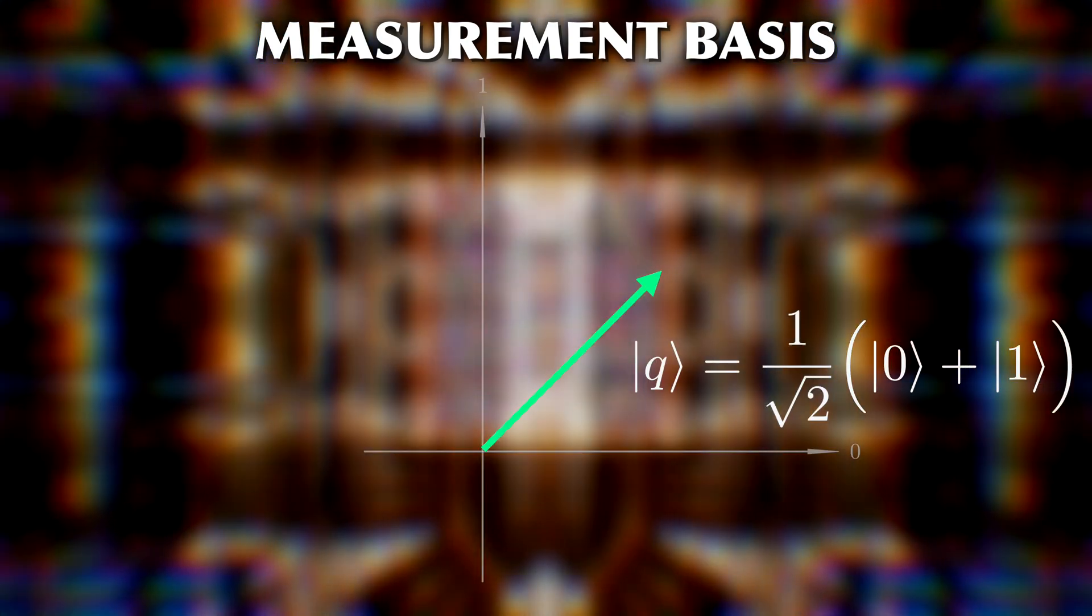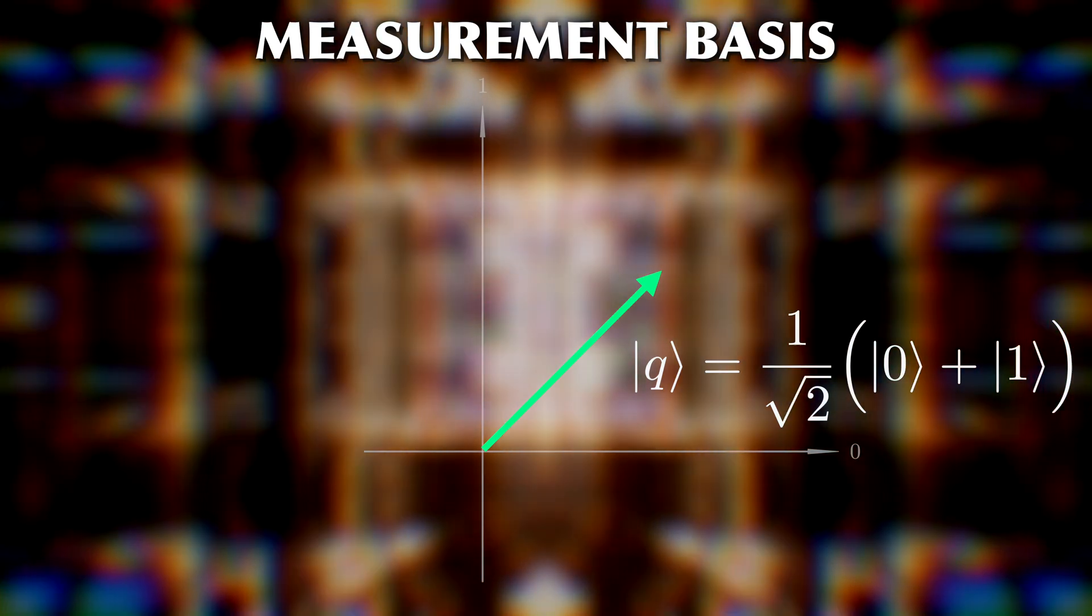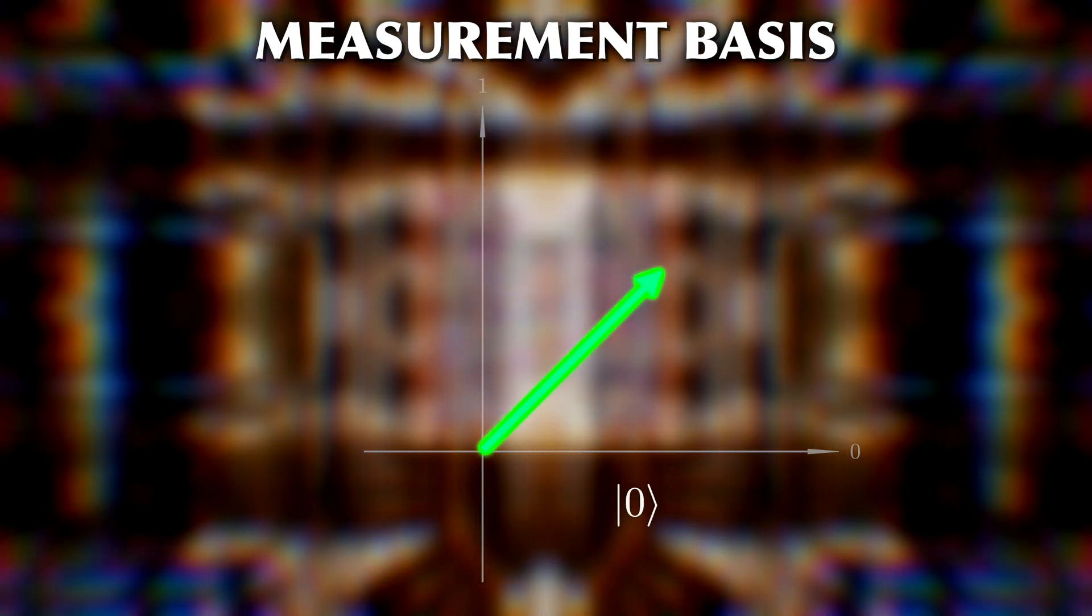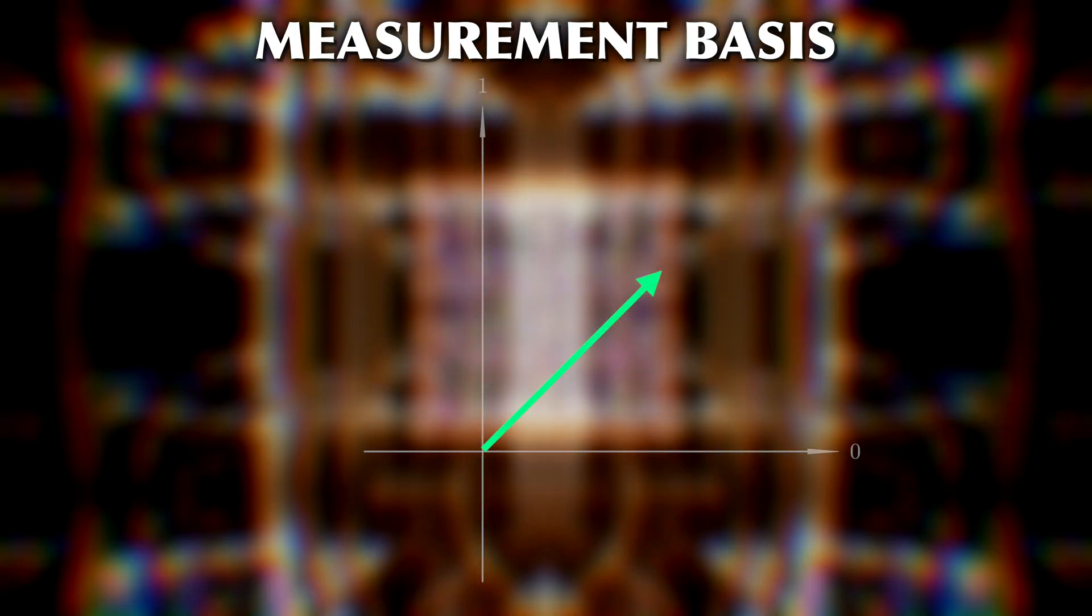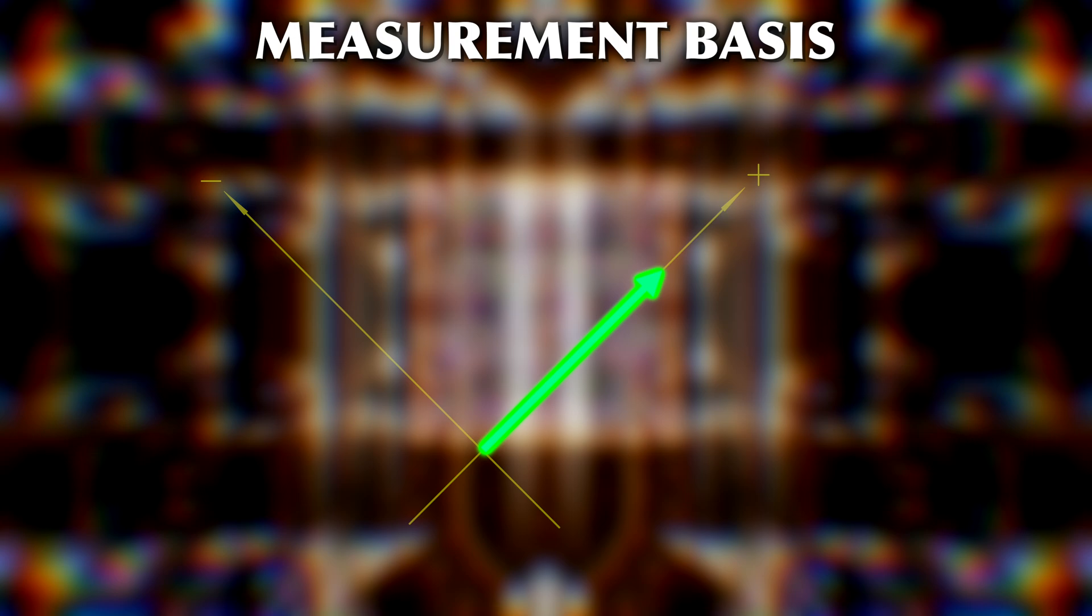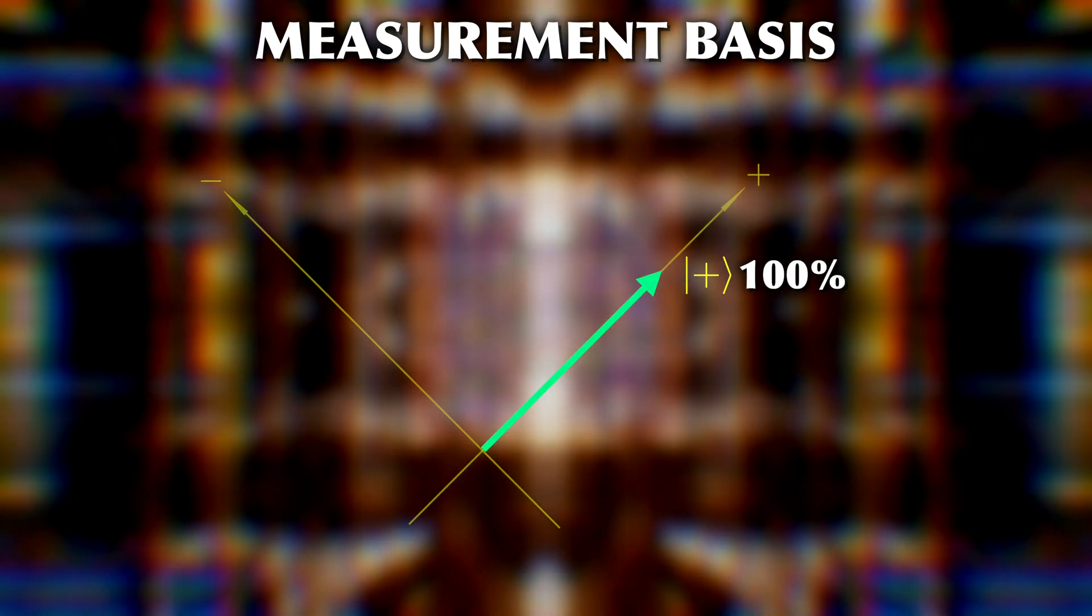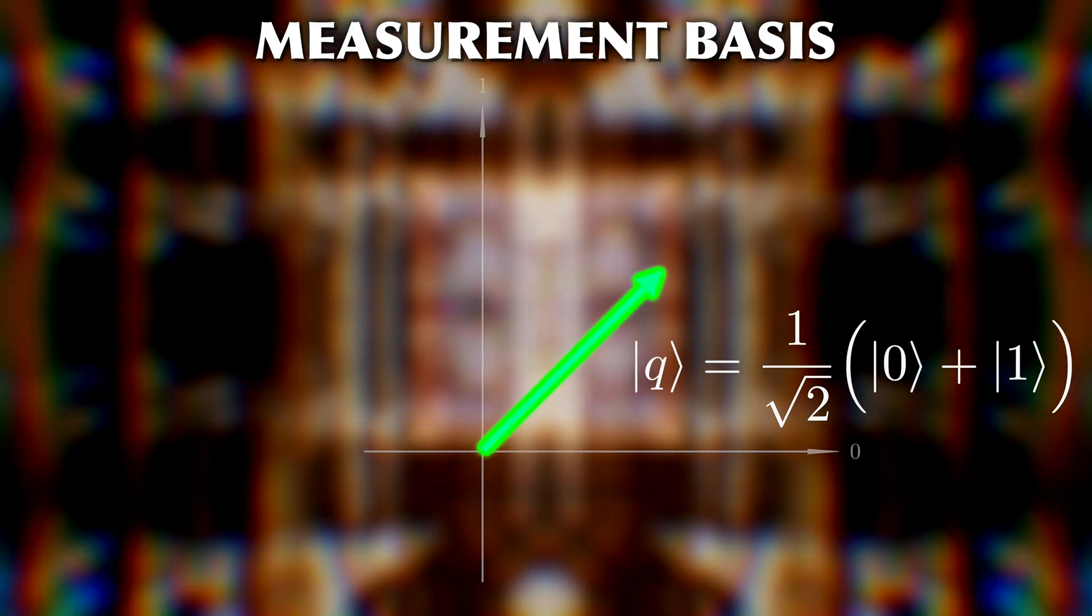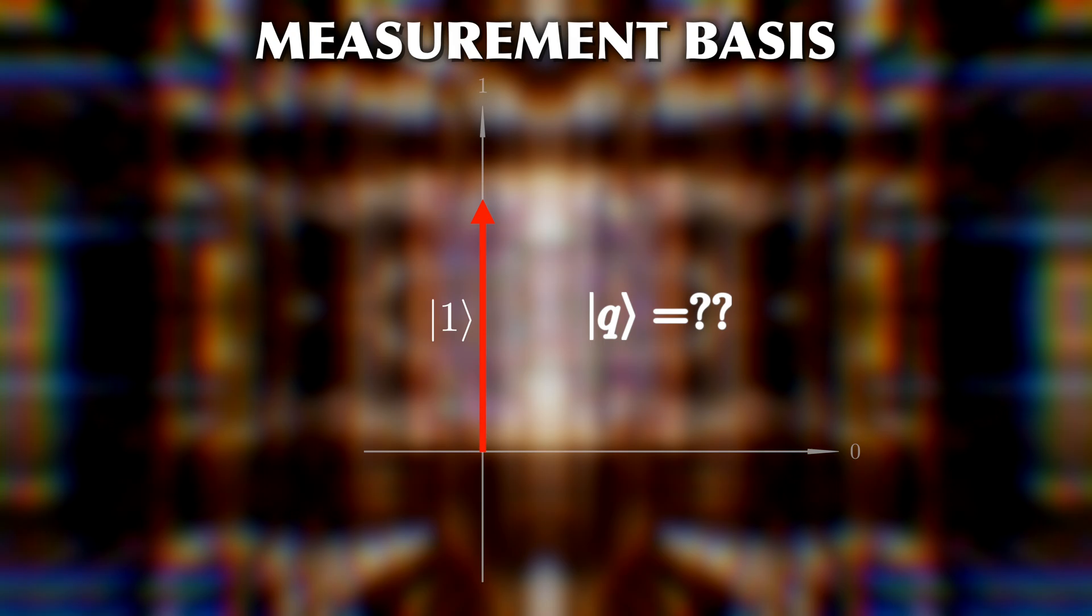Let's look at an example. The state 1 over square root of 2 times 0 plus 1. If we measure it in the Z basis, we would get either 0 or 1, each with a 50% probability. However, if we measure that in the X basis, we will get plus with a 100% probability. After a measurement, the state of the qubit will be equal to the measured basis state, and the previous state will be irretrievably lost.